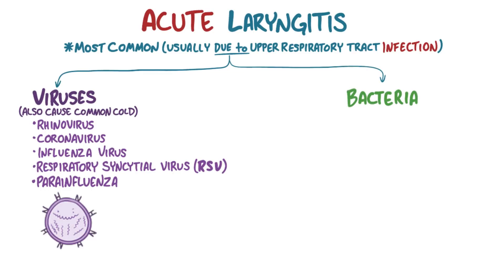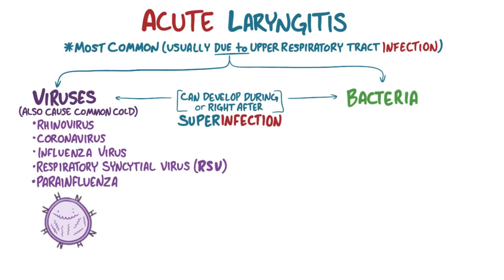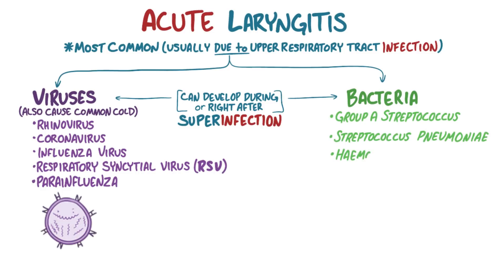Bacterial infections are another cause of acute laryngitis, and sometimes they can develop during or right after a viral infection — that's called a superinfection. Common bacterial causes include group A streptococcus, streptococcus pneumoniae, or haemophilus influenzae.